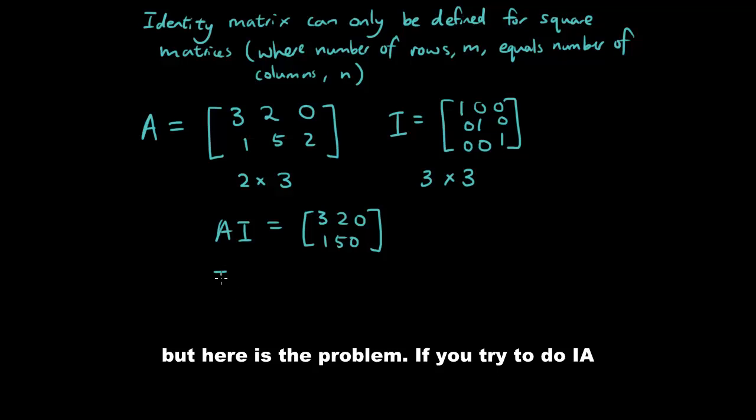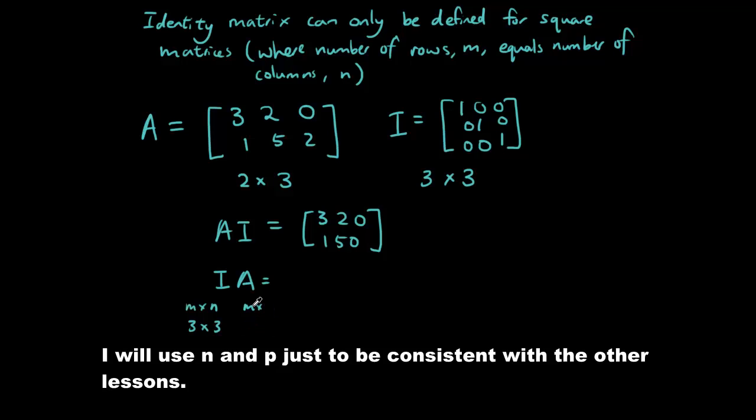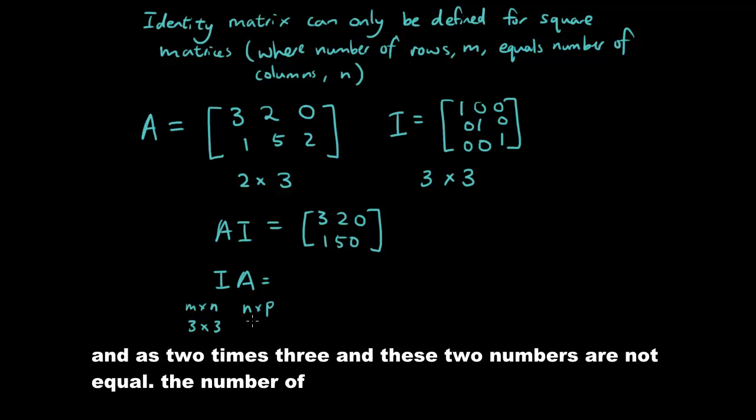But here's the problem. Okay, if you try to do I times A, it's not going to work because I has N times N rows, which is 3 times 3, and A has 2 times 3, and these two numbers are not equal.